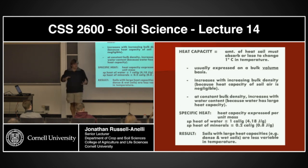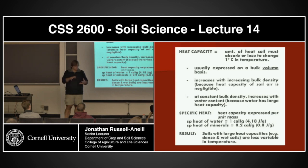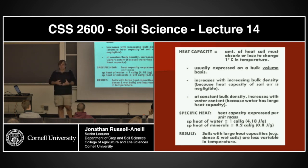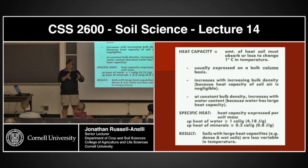Heat capacity increases with bulk density — as a material gets denser and denser, it's going to increase the amount of energy needed to heat that object up. There's more material in the same volume. At constant bulk density, it will increase with water content. In soils, there's a lot of pore space in that volume, so if I put other materials into that volume — like water — those other things add their specific heats as well. I have a volume of bone-dry soil and it takes a certain amount of energy to heat it up, but if I add water to it, it's actually going to take more energy to heat up that same volume.